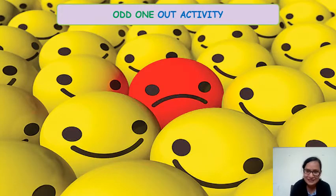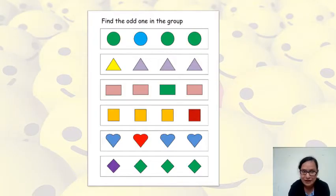So let's start. This is our first slide. In this picture, you can see all the other circles are green in color. We have studied shapes. You remember? Round and round we go, round and round we go. So this is circle.